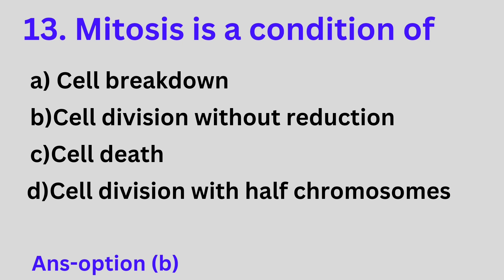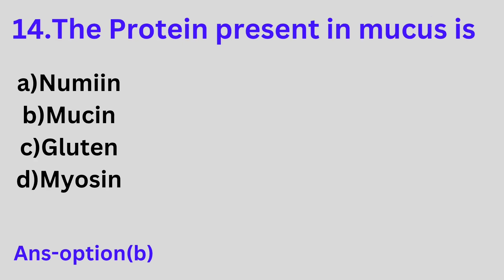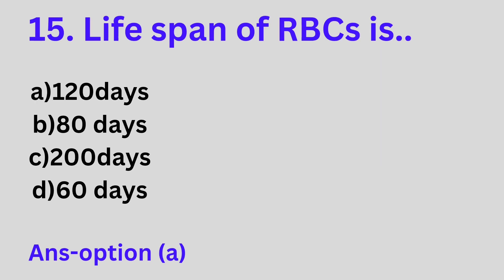Question 14: The protein present in mucus is A. Neumine, B. Mucin, C. Gluten, D. Myosin. Option B is the correct answer. The protein present in mucus is mucin.